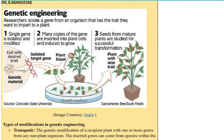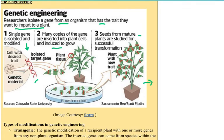The basics of genetic engineering, in simplified form: researchers isolate a gene from an organism that has the trait they want to impart to a plant. A single gene is isolated and modified. Many copies of the gene are inserted into plant cells and induced to grow. Seeds from mature plants are then studied for successful transformation with the new trait. This is how we do genetic engineering in plants.